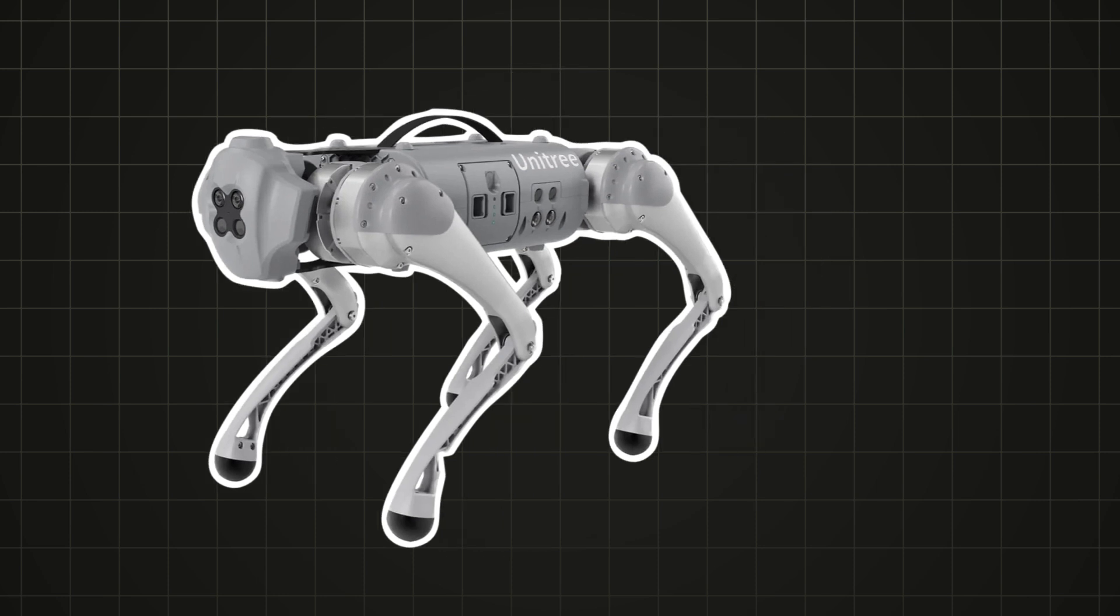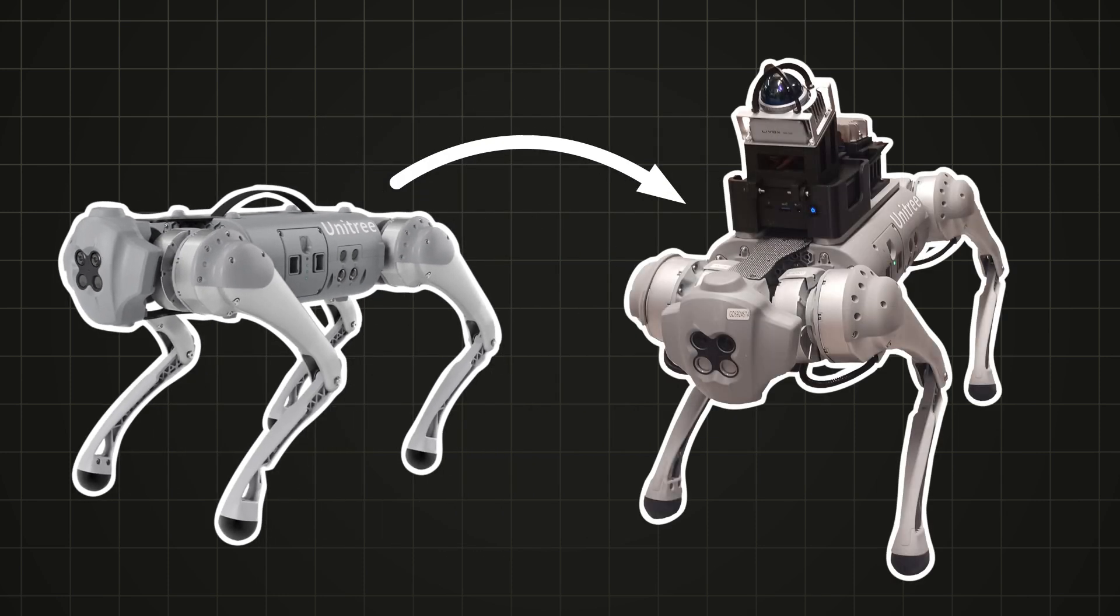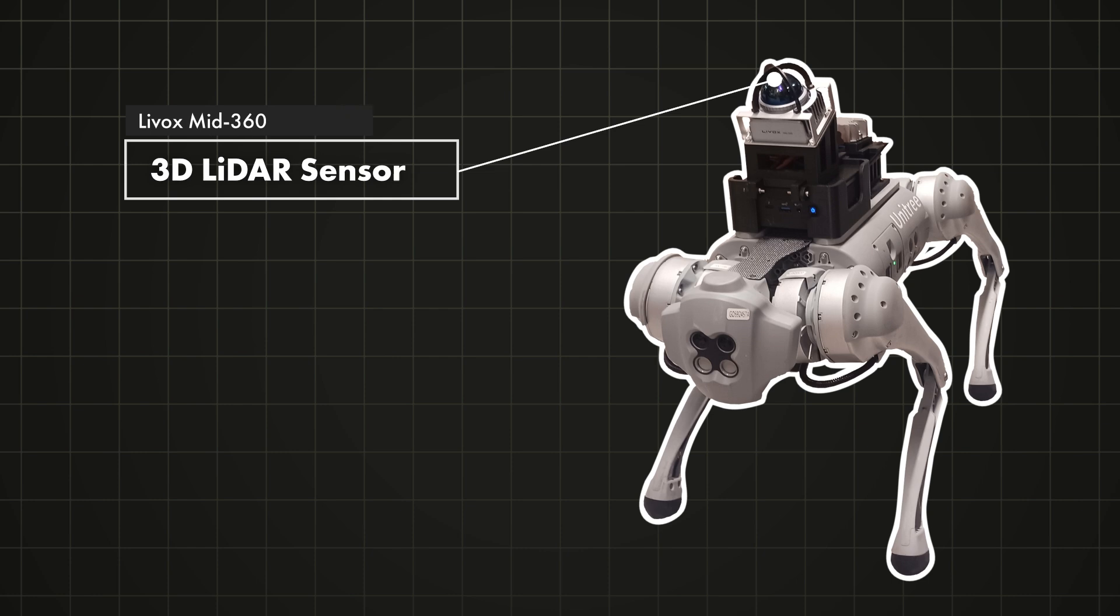The robot we're using is the Unitree Go 1, but we upgraded it with some additional hardware to increase its capabilities, most importantly, a 3D LiDAR sensor on top.